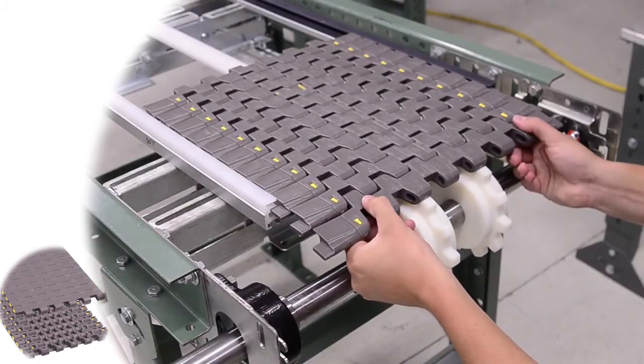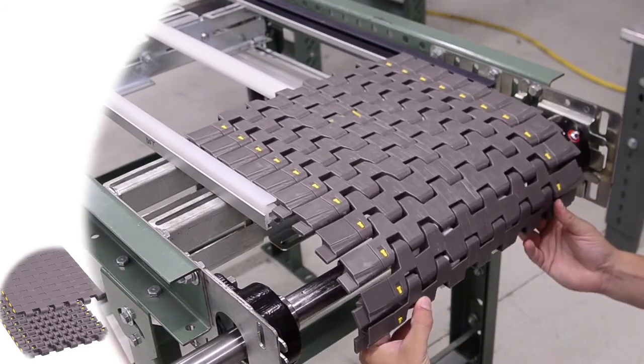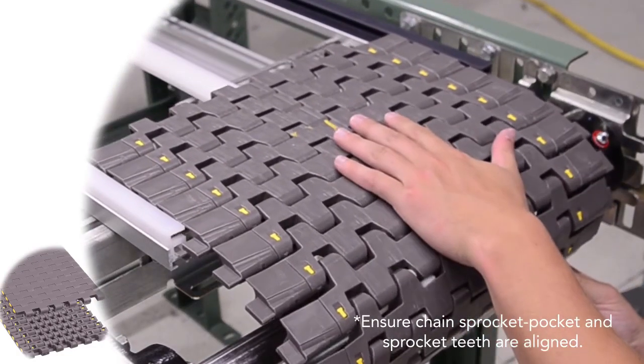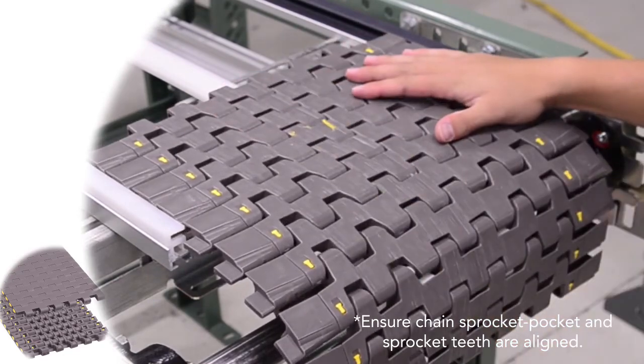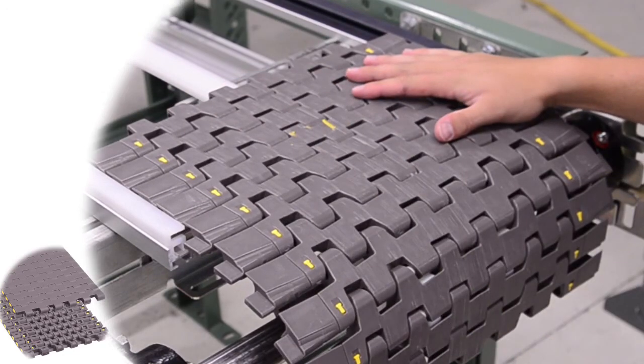After installation and alignment is complete, run a small section of chain over the sprockets and shaft to ensure that the pockets align correctly. Once the sprocket has been positioned correctly, lock it down by tightening the set screw.